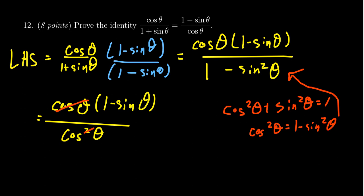The cosine on top cancels with one of the cosines on the bottom. And so we end up with one minus sine theta over cosine theta, which you'll notice this is now the right hand side. So as we went from the left hand side to the right hand side, that completes the proof. We have proven this trigonometric identity.